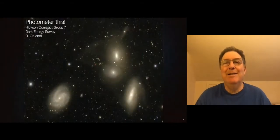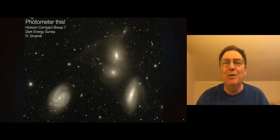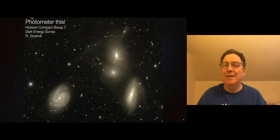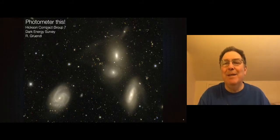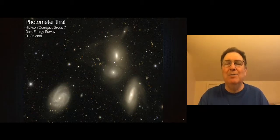Here's a nice picture from the Dark Energy Survey of one of the so-called Hickson compact groups. Even if you thought there was no noise in this image whatsoever, try to decide how much of the light belongs to each of these galaxies — what would you even call the total flux? And even if you decided something, to extract it from this image would be pretty tough. These galaxies don't look like perfect de Vaucouleurs or exponential profiles either, so we don't have models for these.